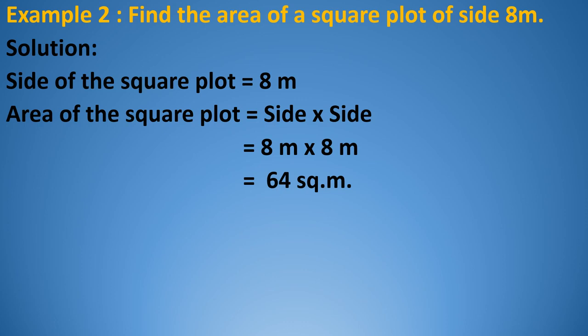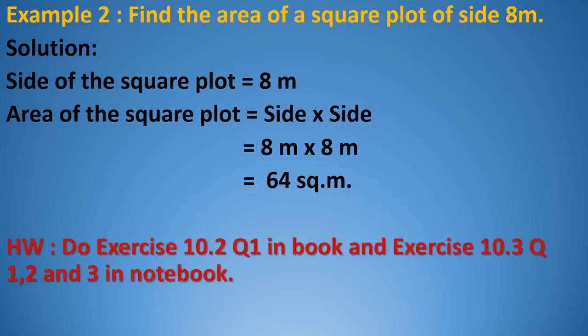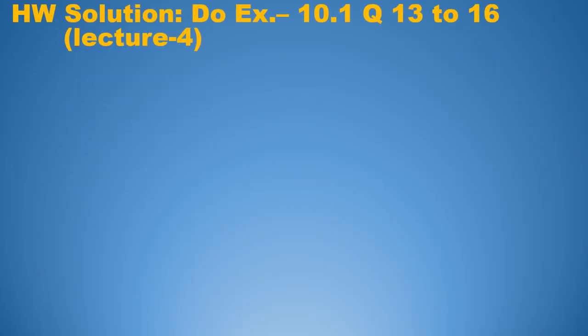What we have learned: how to find out the area of irregular figures with the help of squared paper, and how to find out the area of a square and rectangle with the help of formulas. Now, on the basis of this, you have to do exercise 10.2, question numbers 1, 2, and 3 in your notebook. Now see the homework solution of exercise 10.1, question numbers 1, 2, and 3, given in lecture number 4.